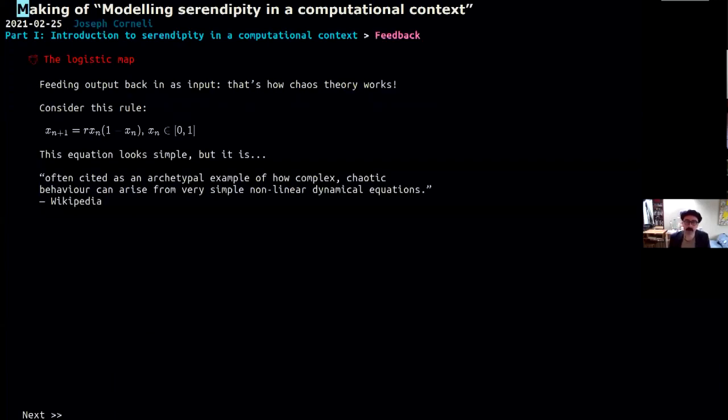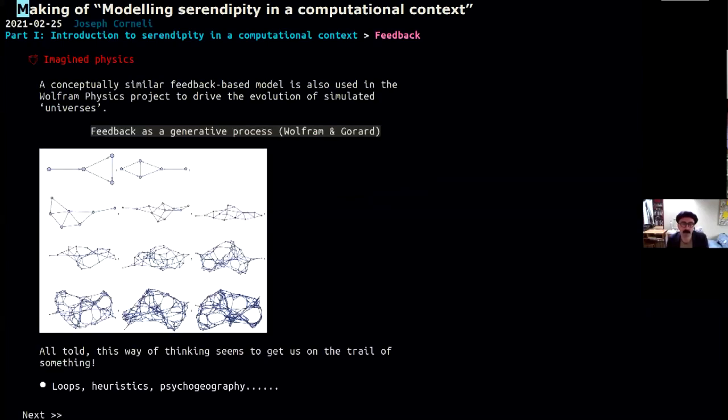In fact, this is how chaos theory works. So here's a simple rule. We take xn, which is a number in this interval 0, 1. We take 1 minus that number, multiply it by the original number times r. And that's how we define xn plus 1. And we just keep at it now. And this equation, of course, looks very simple. It's a quite nice equation, which should be familiar in style with anyone who's done high school. But in fact, this is cited as an archetypal example of how complex chaotic behavior can arise from very simple nonlinear dynamic equations. So it looks simple, it produces complicated output.